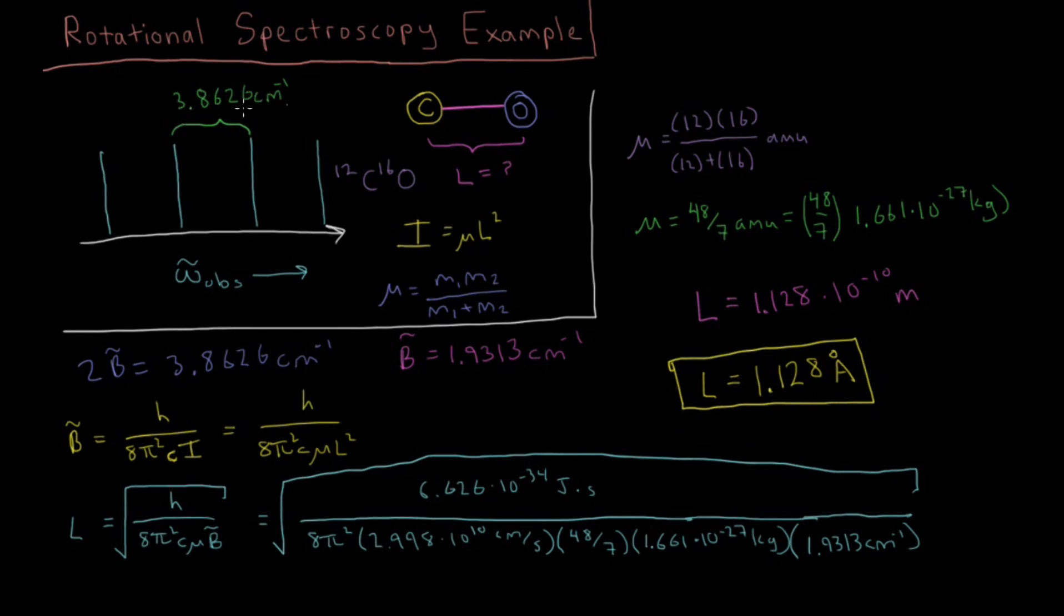So this is a prediction of quantum mechanics that this bond length is 1.128 angstroms if you have a microwave spectrum which has these distances between the peaks here in wavenumbers. And how does that prediction stack up once we compare it to the experimental bond length of carbon monoxide as determined by other methods? Well, that is correct to every digit we have reported it.